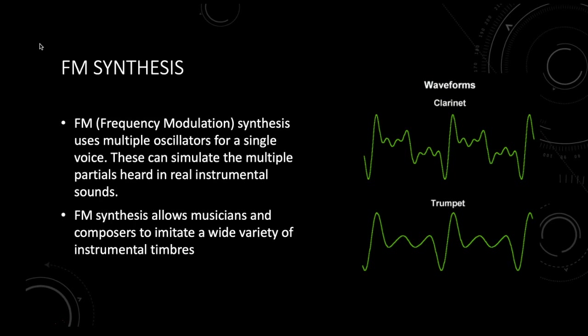The sound of a real instrument is characterized by a lot of different frequencies at once — something we talked about in the first week of class. What makes a trumpet sound different from a clarinet is that the waveform actually sounds different. There are different harmonics, different partials that emerge at different strengths. In the trumpet waveform, you can see three distinct pitches: a large fundamental and two higher register components that blend audibly into one tone.